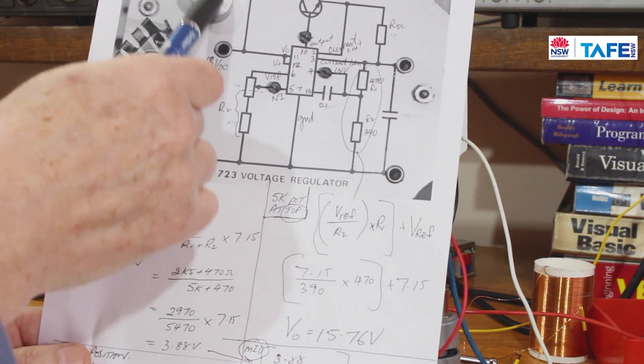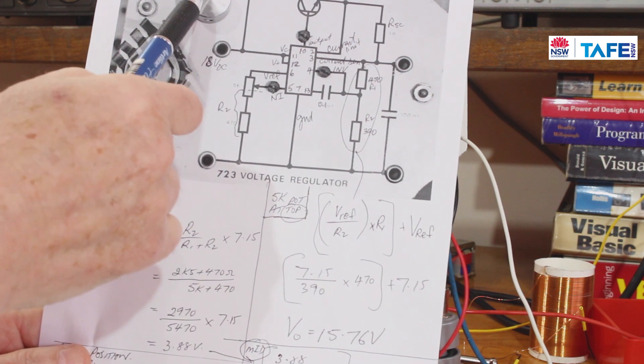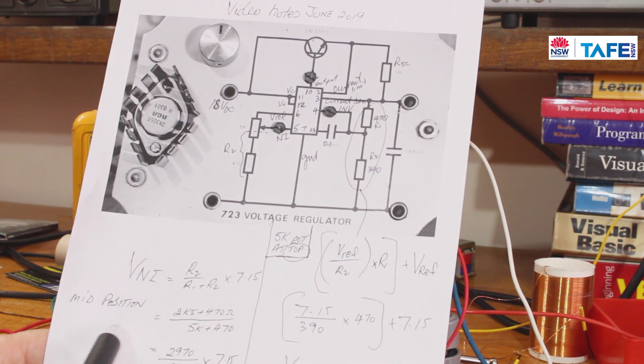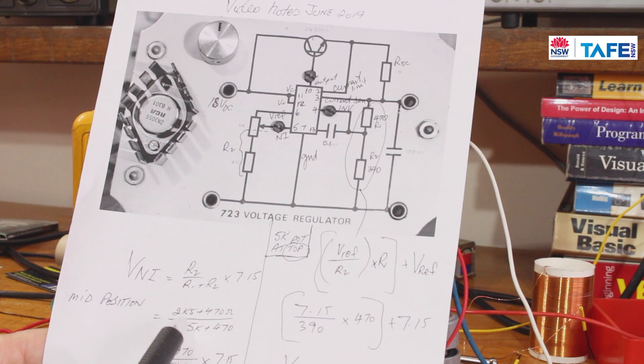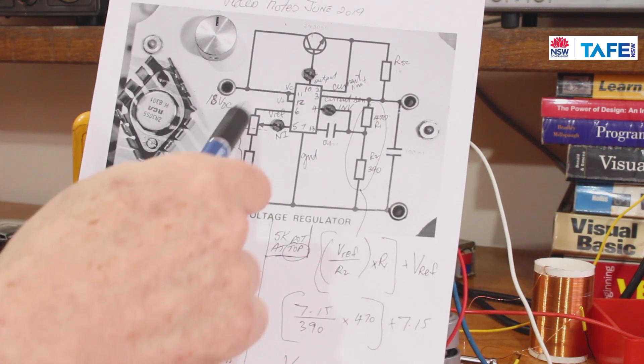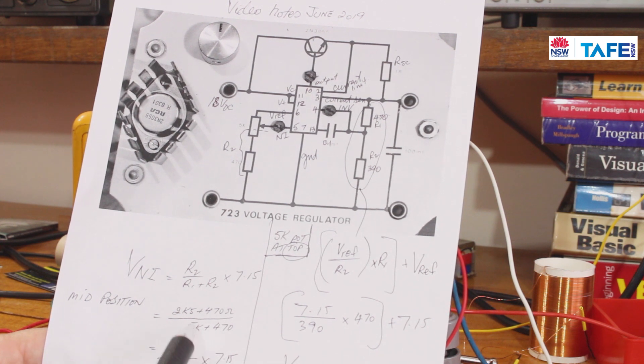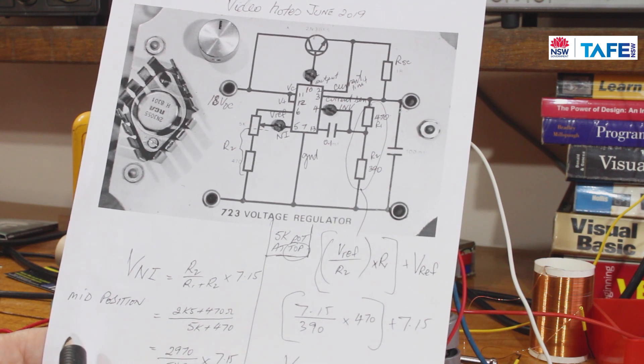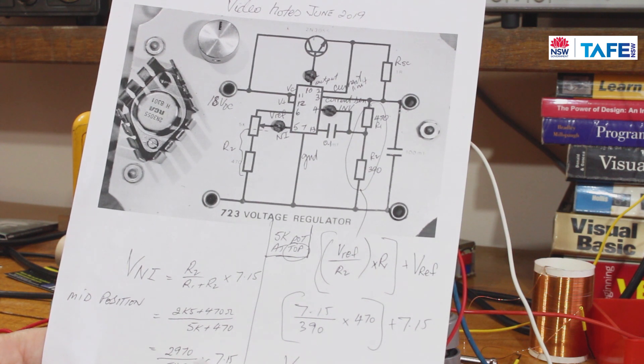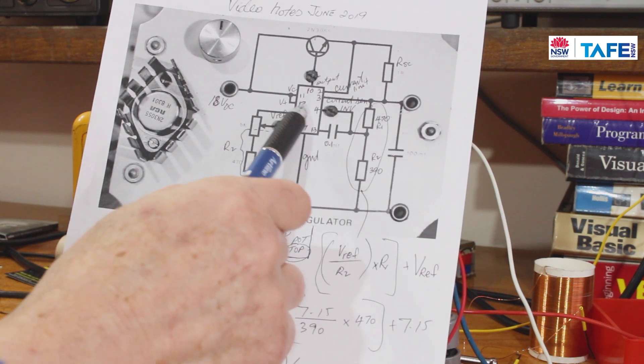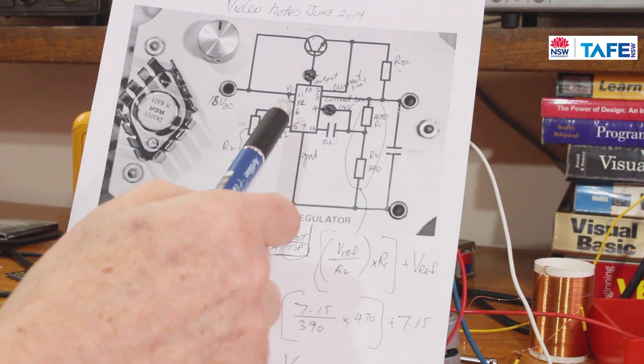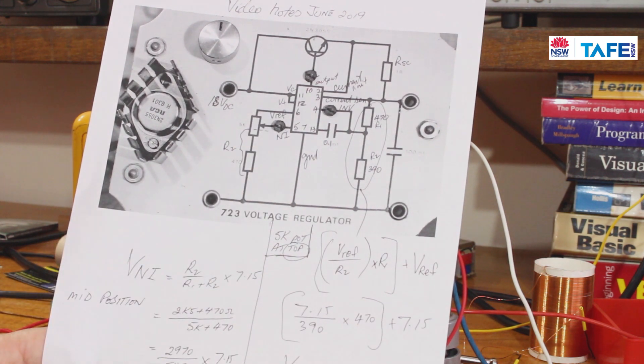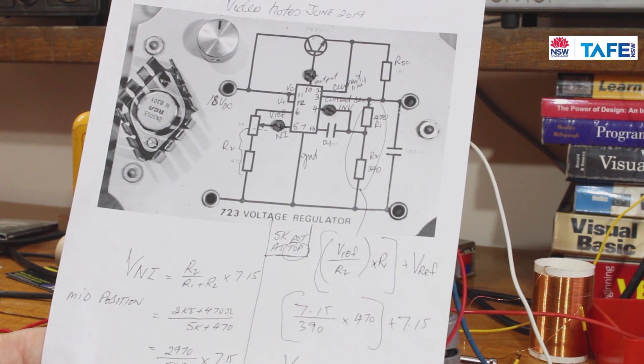Now if we go and we have a look at the mid position on this variable potentiometer, I've pretty well got that shown here in my diagram. In the mid position we should have half of 5k, which would be 2.5k, added to the 470 ohms, and then divided by the 5k plus 470 ohms. So 2970 divided by 5470 times the reference voltage, which is the internal reference voltage being offered by the special zener diode inside the 723, and that gives me 3.88 volts out.